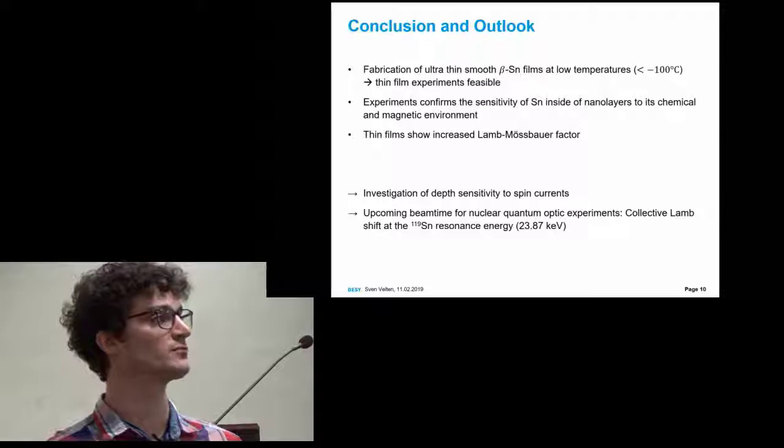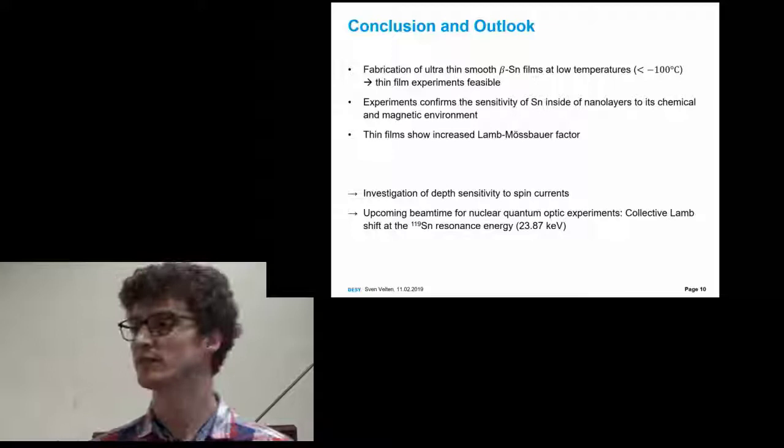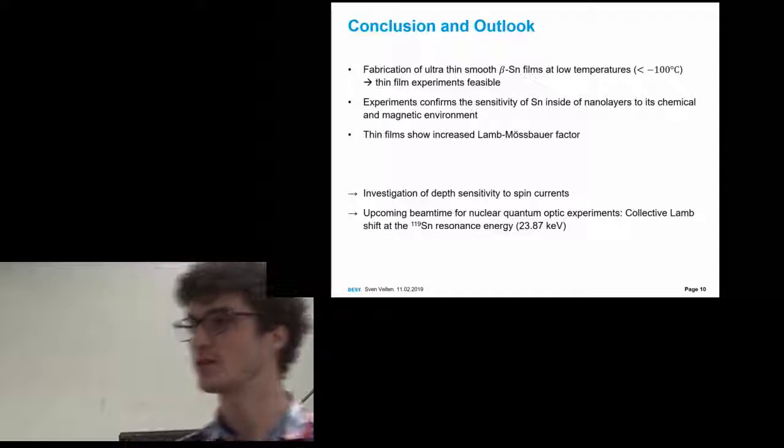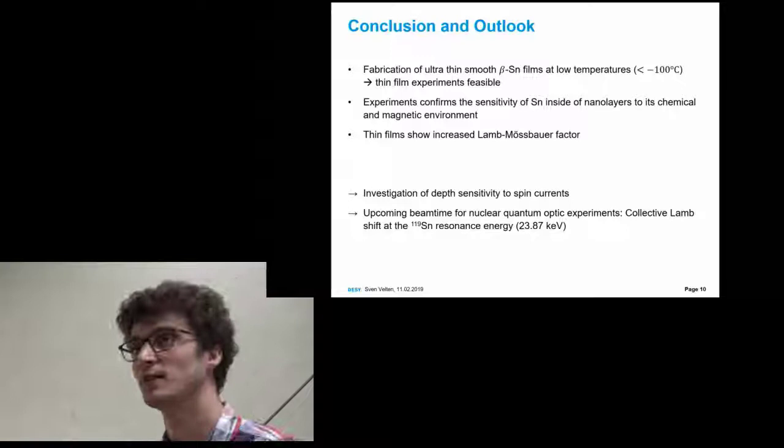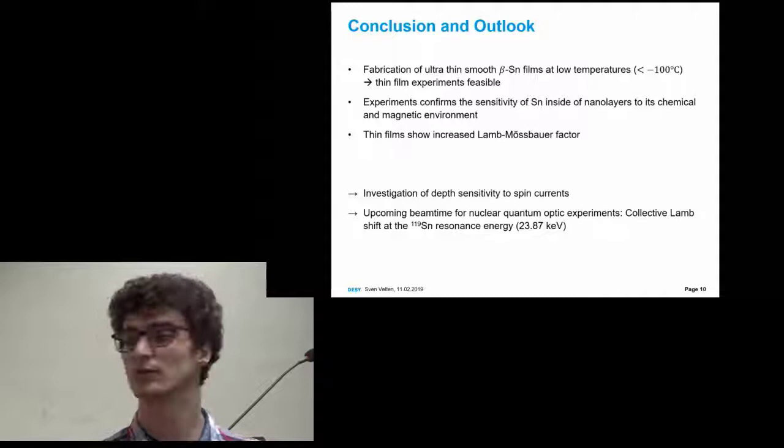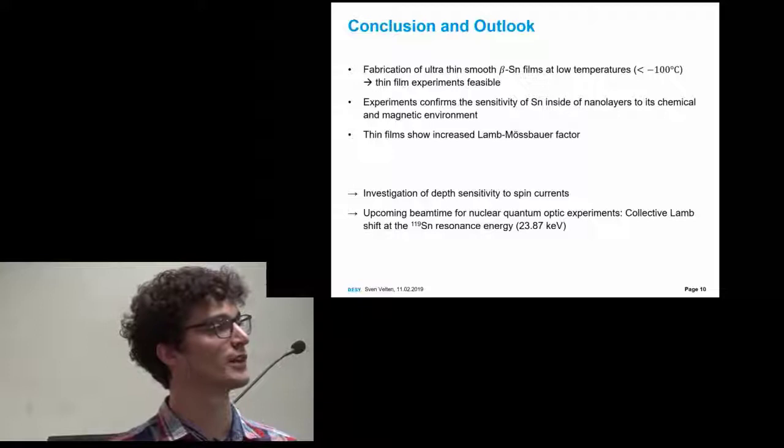We also tackled the problem to investigate some spin currents. We wanted that a spin current travels through the beta-tin and to see if we can detect this. We did some rough calculations, and probably the magnetic hyperfine splitting is too low, but DFT calculations are definitely of interest here. Also, we got some beam time granted now for nuclear quantum optic experiments, where our first experiment would be to measure the collective Lamb shift at the corresponding tin energy at 23.9 keV.